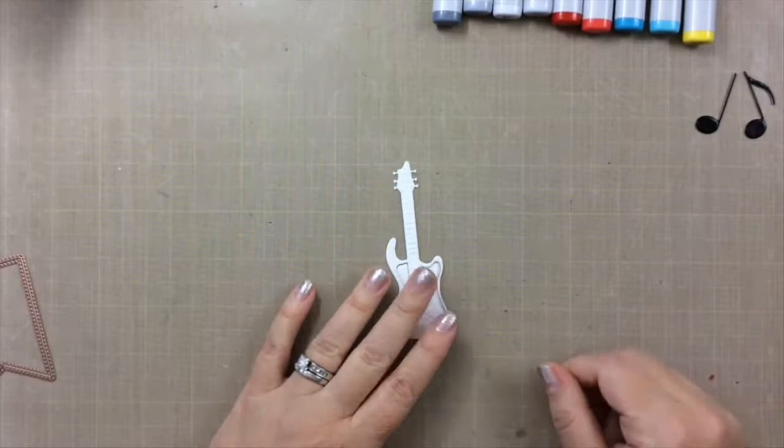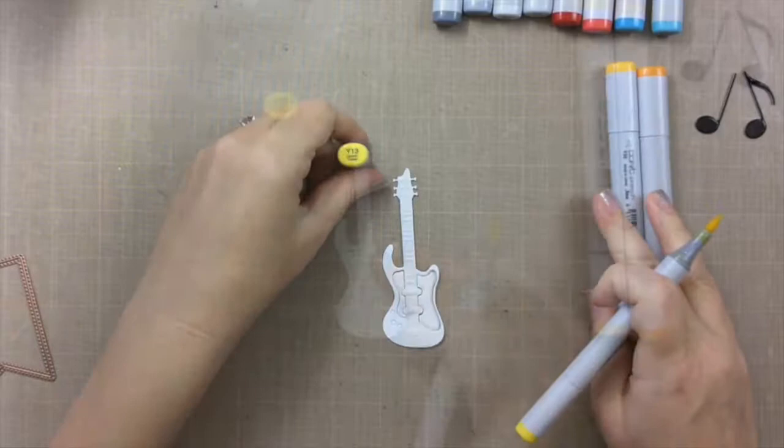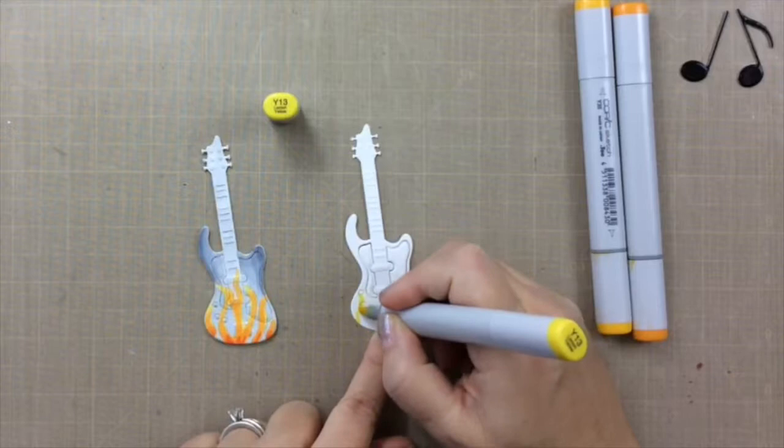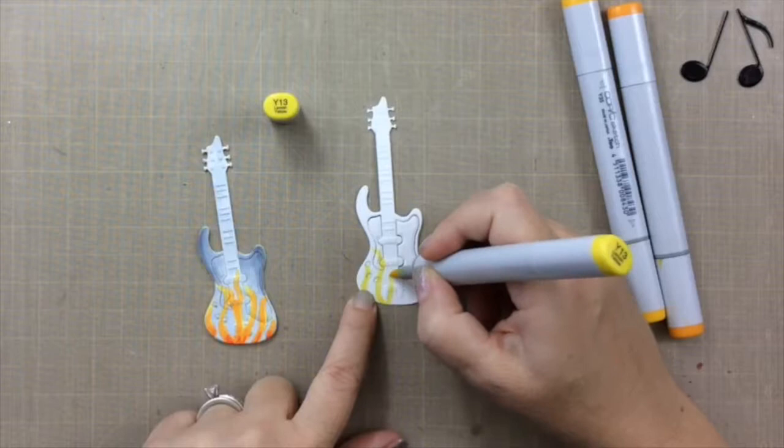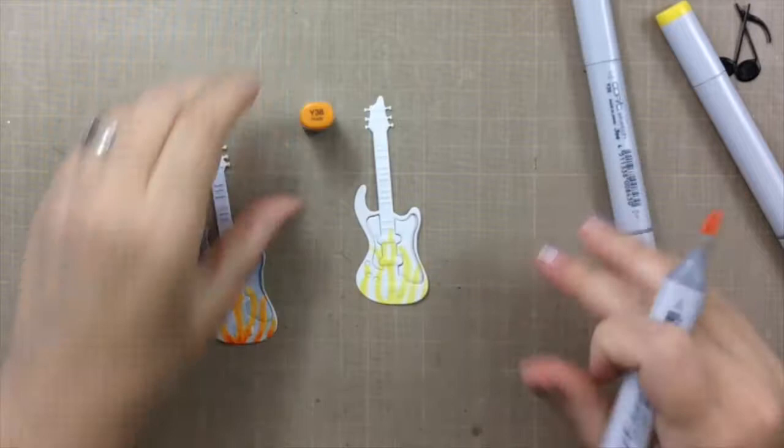So I'm going to start with a yellow Copic marker here, and I'm just going to kind of outline the way that this is going to look on the front. You can see on the left here I've tried it before—this was my practice guitar, and it turned out great. But this time I'm going to do it just a little bit different. So I am using here a Y13, which is a yellow marker. It's hard to see a little bit on this video, but as I add this Y38, you'll be able to see a little better these flames coming into shape. This is really kind of fun to draw.